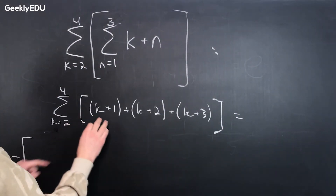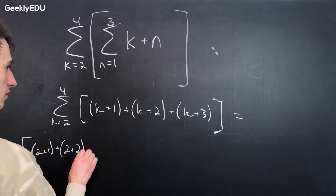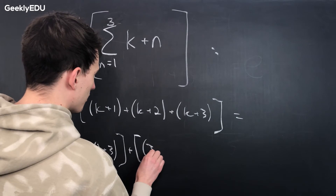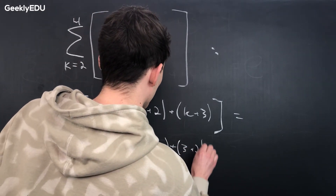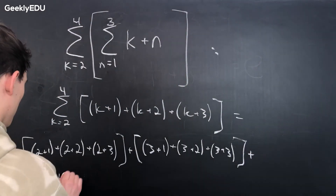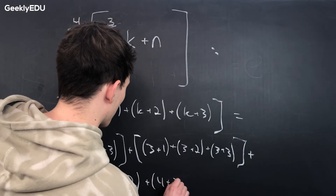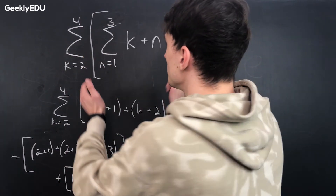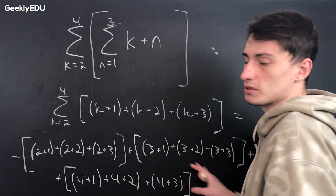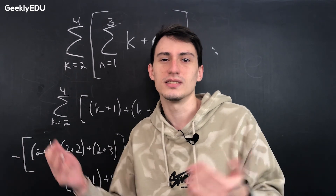Now we plug in the values of k. For k=2: (2+1) + (2+2) + (2+3). For k=3: (3+1) + (3+2) + (3+3). For k=4: (4+1) + (4+2) + (4+3). And that's how you do double sums — first isolate the inner sum, rewrite it as its own sum, then plug in the outer values. This process repeats for triple or higher-order sums too.